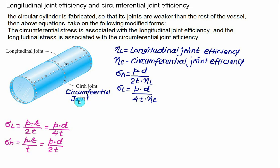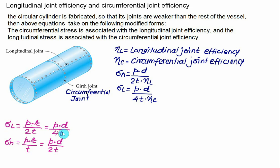Both longitudinal and circumferential joint efficiencies are important considerations in the design and construction of cylindrical structures, helping ensure integrity and safety under various loads and environmental conditions. When given these efficiency values, modify the hoop stress formula — dividing by longitudinal efficiency — and the longitudinal stress formula — dividing by circumferential joint efficiency. The two efficiencies appear in opposite formulas.